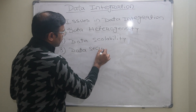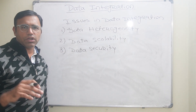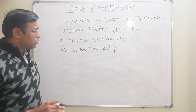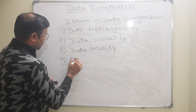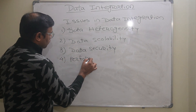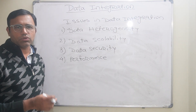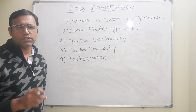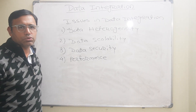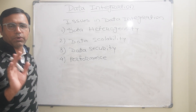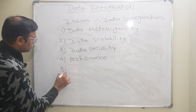If the data is coming from different sources and it is secured, then we have to encrypt or decrypt it, which is again a very tedious task. The fourth issue is performance — since the data is coming from different sources and we have to combine it, the performance of the system may be affected. This is again a major issue.